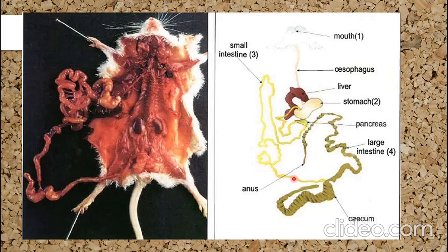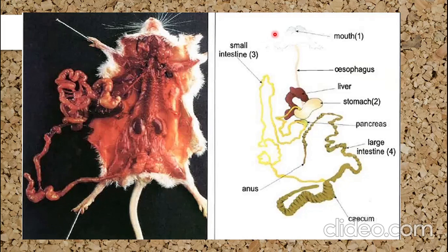Then the food will go to the large intestine, then to the anus, where the waste will go outside the body. So the digestive tube goes from the mouth, then the esophagus, then the stomach, then the small intestine, then the large intestine, and finally the anus.